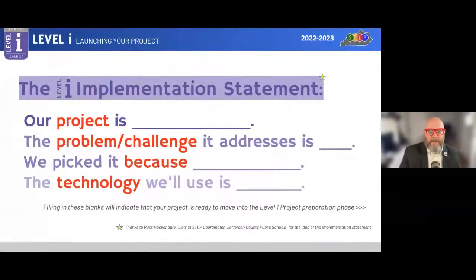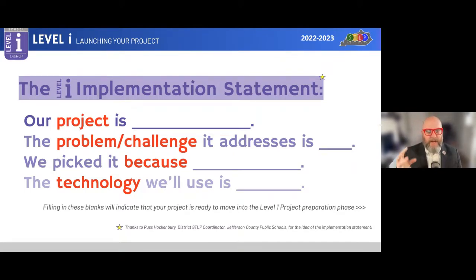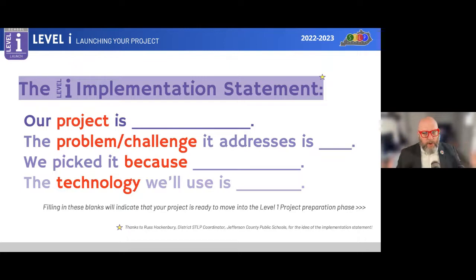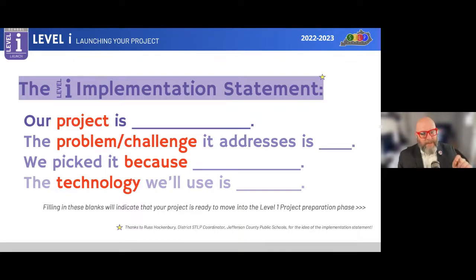Here's the implementation statement — helpful thanks to Russ Hockenberry and Jefferson County Schools. Students fill in: 'Our project is blank. The problem or challenge it addresses is blank. We picked it because blank, and the technology we'll use is blank.' Filling this out helps narrow the scope of projects. Students often have tremendously large concepts, like ending world hunger, and this helps them narrow down to something manageable, doable, and achievable while helping them iterate which directions to go.